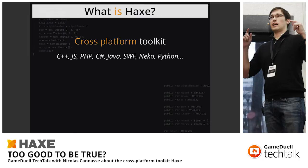Haxe enables you to compile to many different platforms. A platform in terms of Haxe is a given technology. Currently Haxe supports compilation to C++, JavaScript, PHP, C#, Java, Flash, Swift, NekoVM, and Python. So when you write something in Haxe, you can generate code for all these platforms. We have one single language — the Haxe language — and multiple platforms we generate code for.